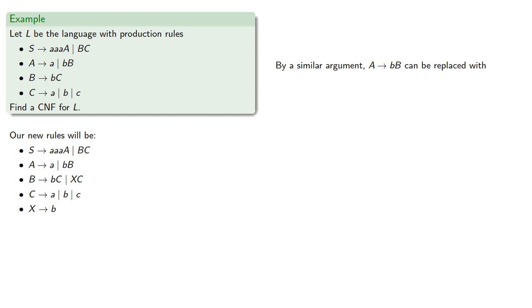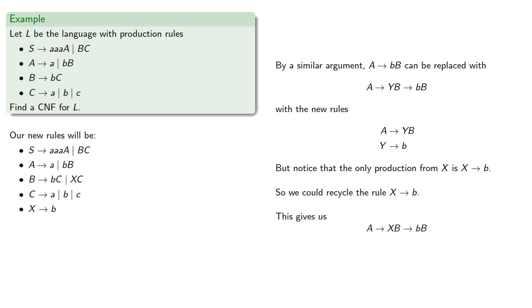Now, by a similar argument, A to bB can be replaced with A produces YB produces bB, with the new rules A produces YB and Y produces b. This time notice the only production from X is X produces b. And because this is the only production, we could recycle this rule. And so this gives us A produces XB produces bB, and only requires introducing the rule A produces XB.